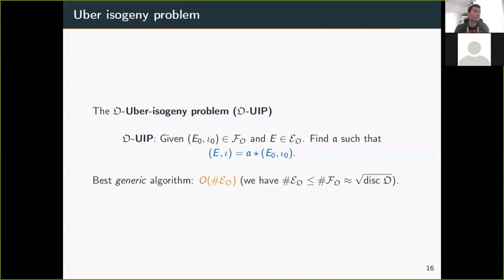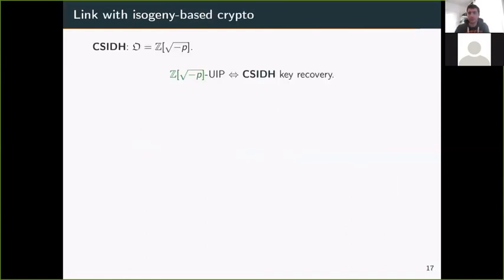Let me illustrate the interest of this new problem by sharing the links between this problem and various protocols and security problems in isogeny-based cryptography. Of course, the first obvious starting point is CSIDH. Given the formulation of CSIDH and the formulation of OUIP, it's no surprise that the ℤ[√-p]-UIP is actually equivalent to the CSIDH key recovery problem.